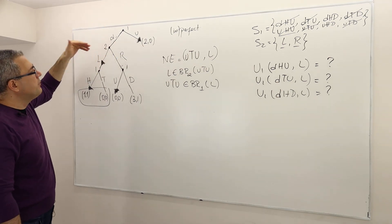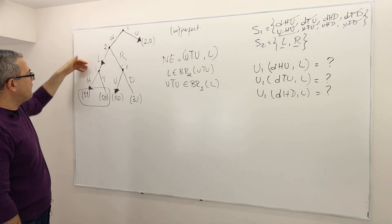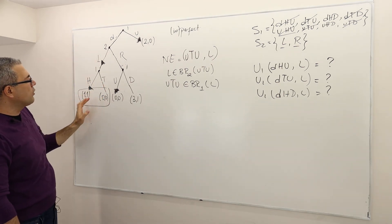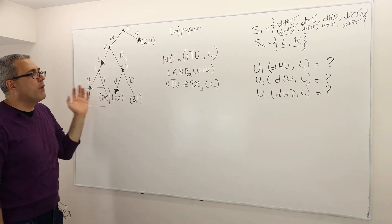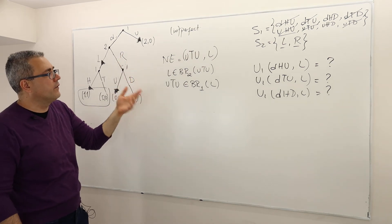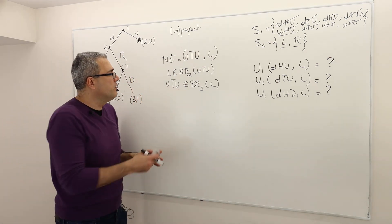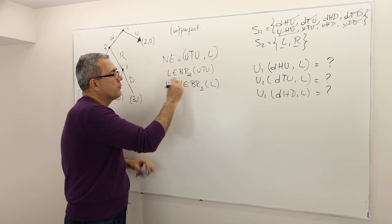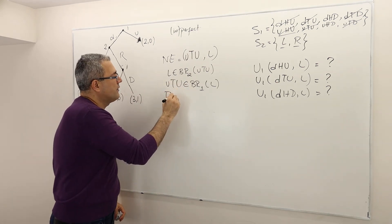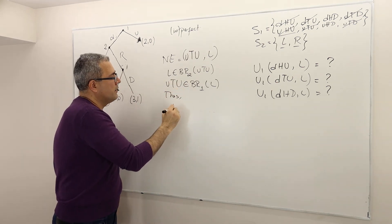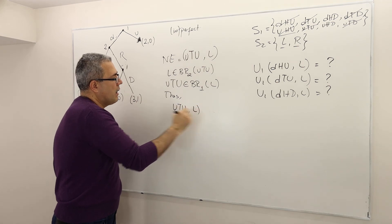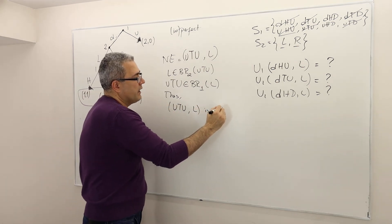If he played D, given that player two is playing left, his payoff will be either one, one, I mean, one or zero. Both of them are worse than two payoffs. And hence, UTU is also best response for player one. Hence, UTU, L is also a Nash equilibrium.